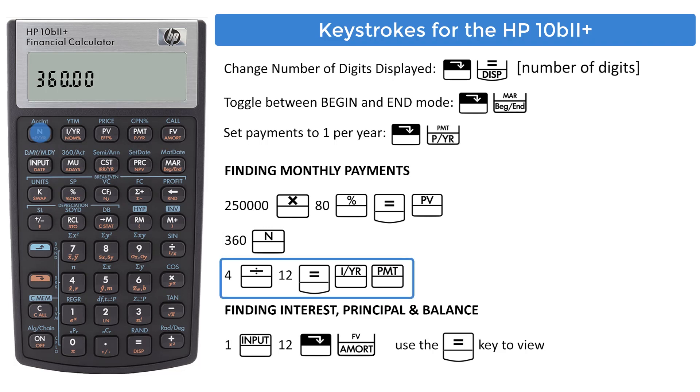To enter interest, first divide it by 12. So enter 4, division key, 12, and equals key. Point 33 will be entered into the interest register. Now compute the payment amount by pressing the PMT key.